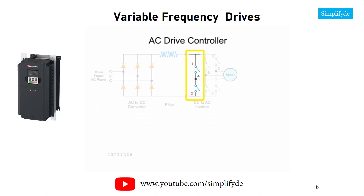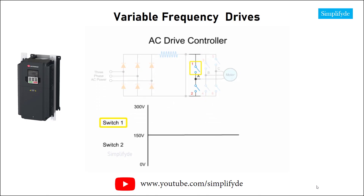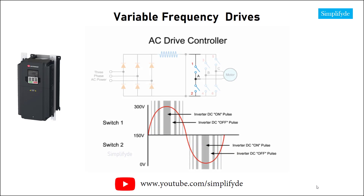In each pair of switches, one switch generates the up component of the sine wave and the other generates the down component. The inverter output is not a true sine wave, but an approximation based on the application of pulse width modulation, or PWM.